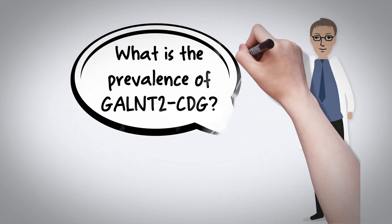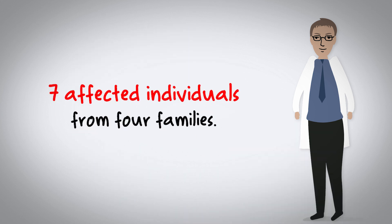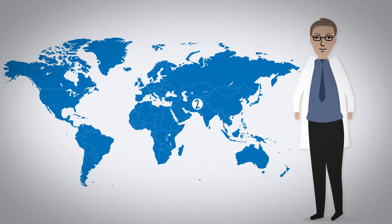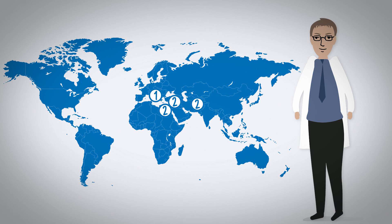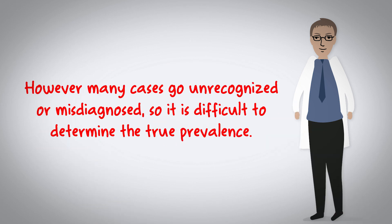What is the prevalence of GALNT2-CDG? In this work, Zillmer, Edmondson, and Catterall identified seven affected individuals from four families: two patients from an Afghan family, one patient from an Italian family, two patients from a Syrian family, and two patients from an Egyptian family. Previously, Catterall et al. reported a Moroccan patient and an Afghan patient. However, many cases go unrecognized or misdiagnosed, so it is currently difficult to determine the true prevalence.